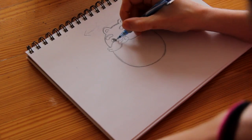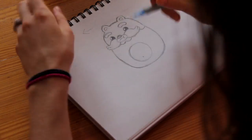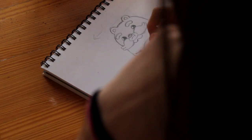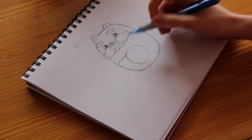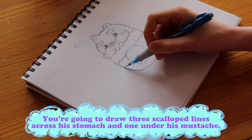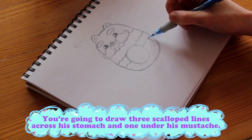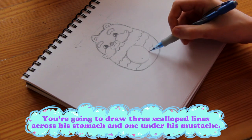His stomach is a big, big old circle. And then he's got a little cute little belly button. We're just going to go ahead and scallop, which is half little mini circles all the way around. We're going to go ahead and do it on this side.